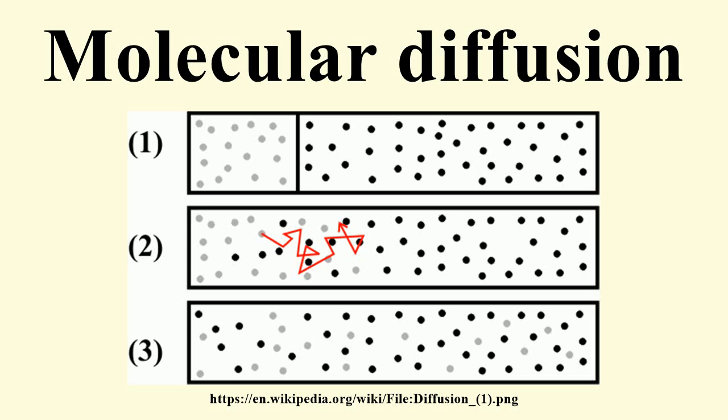The rate of this movement is a function of temperature, viscosity of the fluid, and the size of the particles. Diffusion explains the net flux of molecules from a region of higher concentration to one of lower concentration.